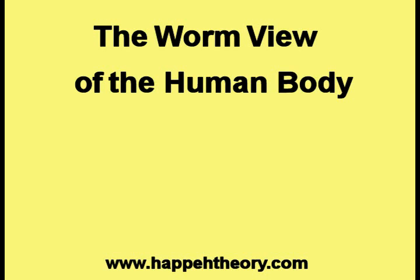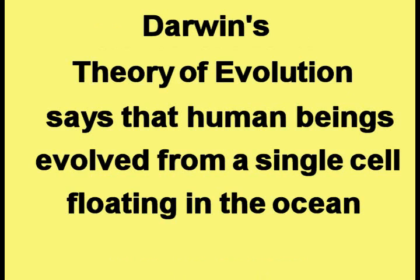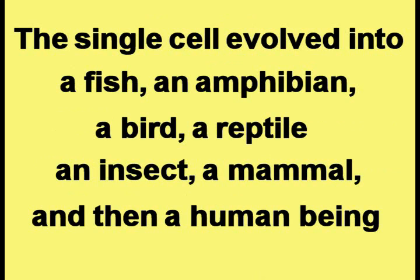This video is about the worm view of the human body. Darwin's theory of evolution says that human beings evolved from a single cell floating in the ocean. The single cell evolved into a fish, an amphibian, a bird, a reptile, an insect, a mammal, and then a human being.